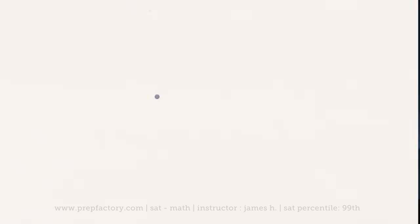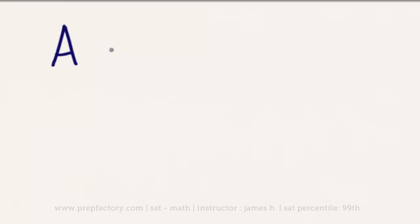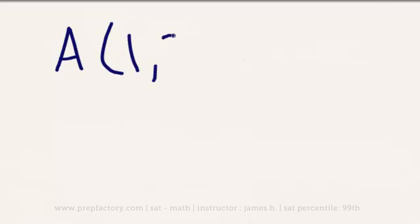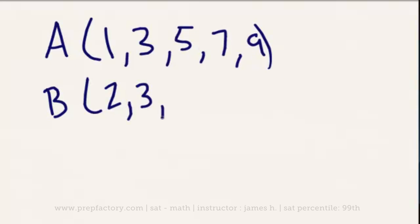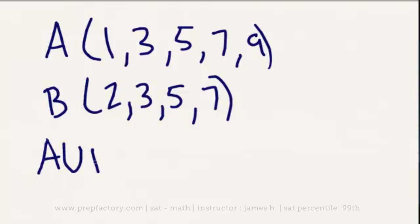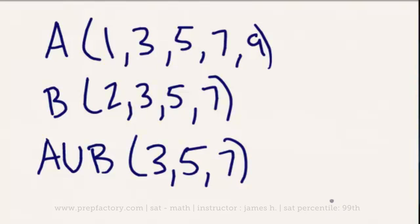Let's take a look at a quick practice problem. Set A contains all single-digit odd numbers. Set B contains all single-digit prime numbers. What is the intersection of sets A and B? Set A — all single-digit odd numbers — would be 1, 3, 5, 7, and 9. Set B — all single-digit prime numbers — would be 2, 3, 5, and 7, since 1 is not prime and 2 is the only even prime. The intersection of these two sets is then just 3, 5, and 7.